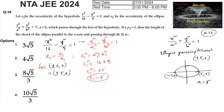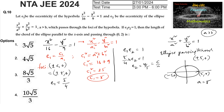Using the condition e1·e2 = 1, and e1 = 5/4 (since c1 = 5 and a1 = 4), we get (5/4)·e2 = 1, so e2 = 4/5. Since e2 = c/a and a = 5, this implies c = 4.